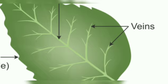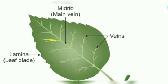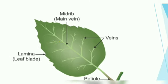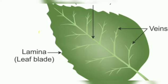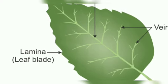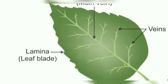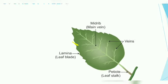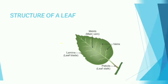These veins are present on a green flat surface called the leaf blade. The leaf is attached to the main stem through a stalk called the petiole. The outer end of a leaf opposite the petiole is known as the leaf apex.